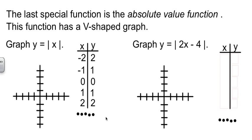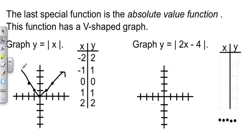So now I have some points I can work with. Negative 2, 2. Negative 1, 1. 0, 0. 1, 1. And 2, 2. Now I've got my points. I just need to connect them. And it is indeed a V-shaped graph.